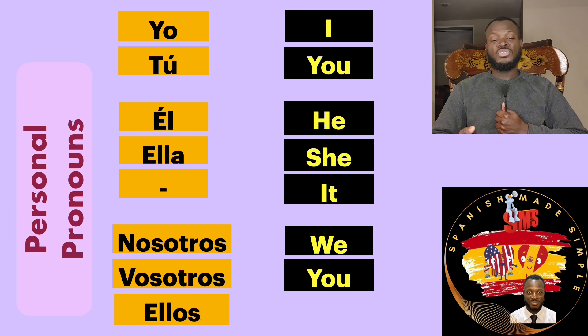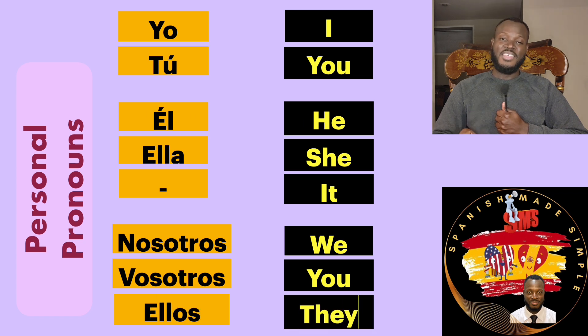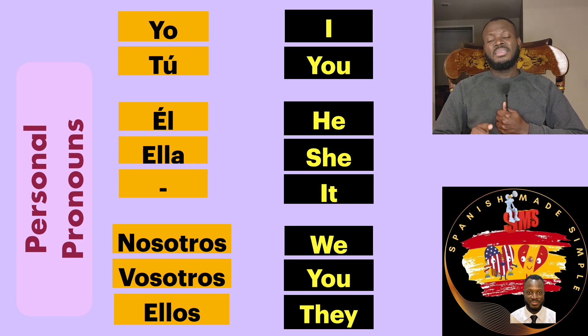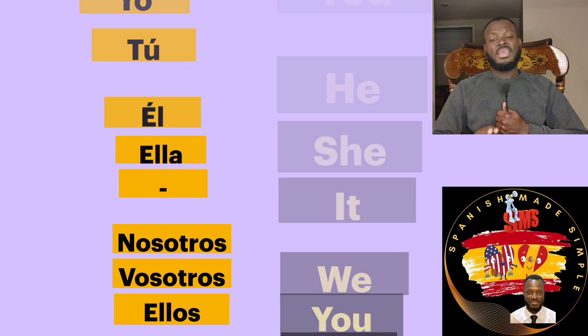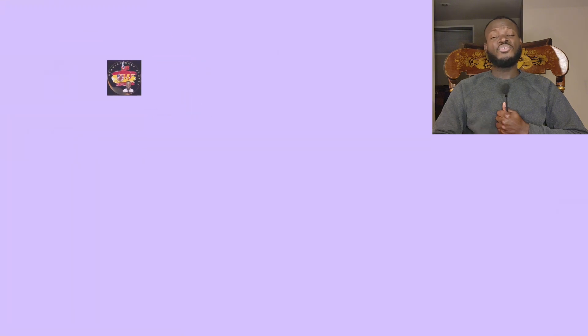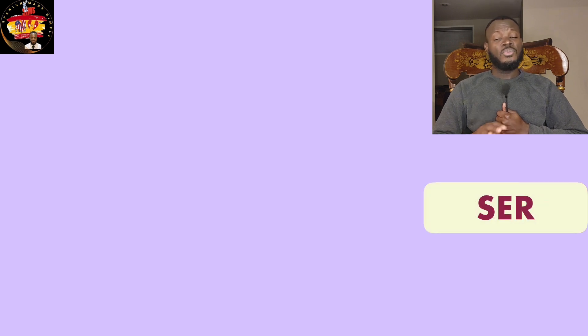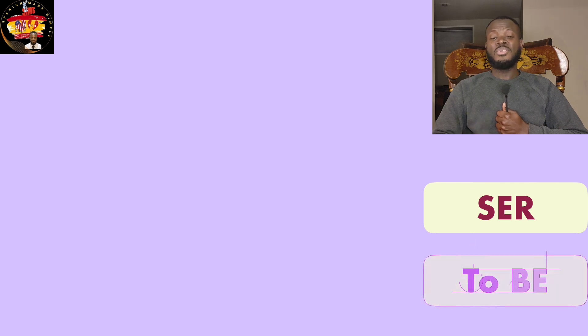'Ellos' for 'they.' 'Él' is used for anything masculine — it doesn't matter whether it is a person, animal, or thing. As long as it is masculine, we use 'él.' 'Ella' is used for anything feminine. As long as it is feminine, we use 'ella.' That's it. Let's conjugate now.